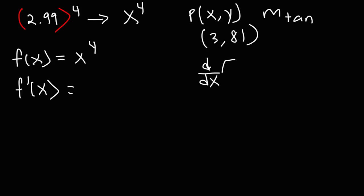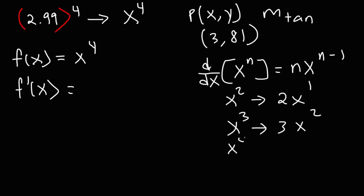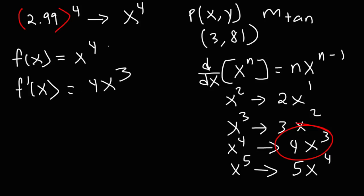The derivative of a variable raised to a constant, the derivative of x raised to the n power is going to be n times x raised to the n minus 1. So for example the derivative of x squared will be 2x to the first power. The derivative of x cubed will be 3x to the second power. The derivative of x to the fourth is 4x to the third power. And the derivative of x to the fifth is 5x to the fourth power. So this is what we need. That's going to be f prime of x, the derivative of x to the fourth power.